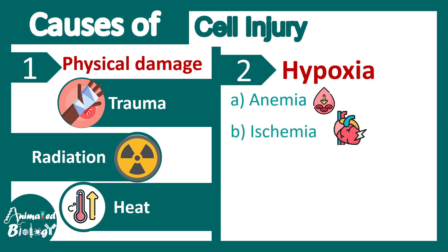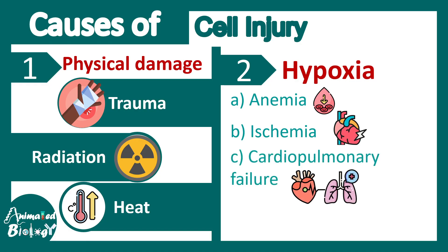There could be ischemia, meaning some blockage in blood vessels ultimately causing some organs to receive less blood than necessary. There could be cardiopulmonary failure that might lead to hypoxia, or sometimes carbon monoxide poisoning can also lead to hypoxia. These are the causes of hypoxia, but what is the effect and how does a cell respond to hypoxia?